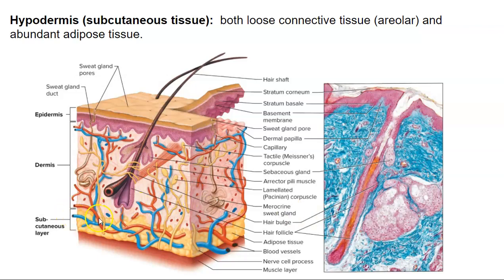The hypodermis, or subcutaneous layer, isn't an official layer of the skin but needs to be discussed. It contains both loose connective tissue — areolar tissue — and abundant adipose tissue. The reason these layers don't separate is the collagen and elastic fibers in the dermis, which blend with the fibers of the hypodermis, allowing stretching rather than separation. If you've had a shot at the doctor's office, the needle is called a hypodermic needle — hypo meaning below, and dermic referring to the dermis — so a hypodermic needle is injected below the skin.